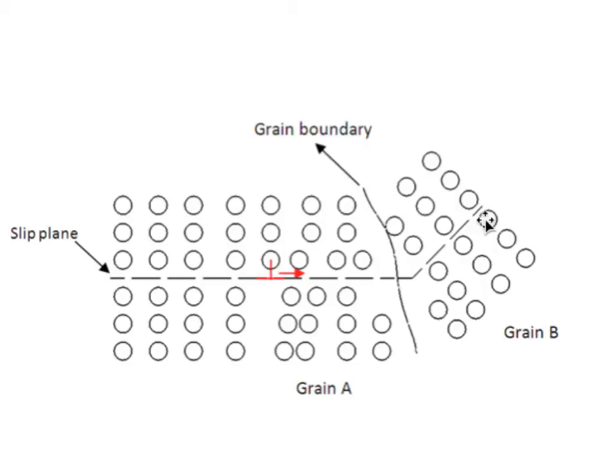It means that the smaller the grain size is, the more grain boundaries we have. And that means that the smaller the grain size is, the stronger the material will be.